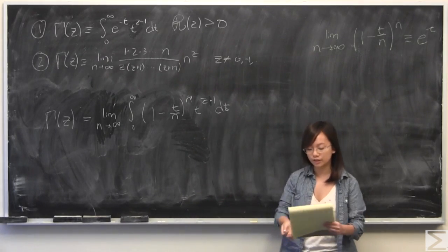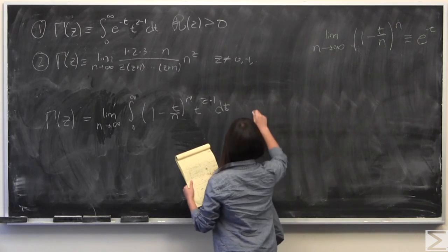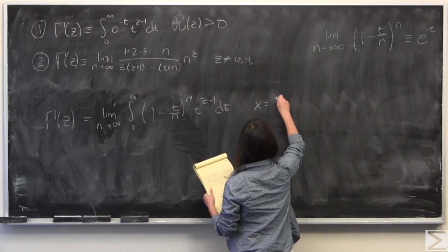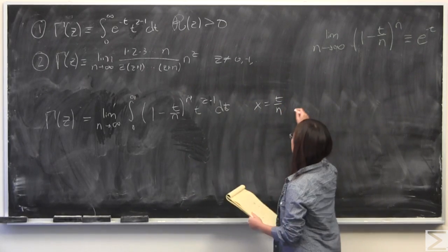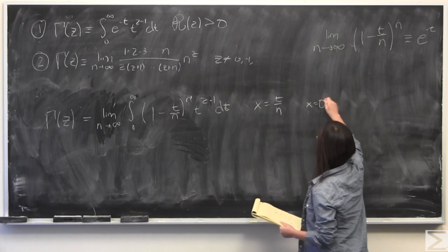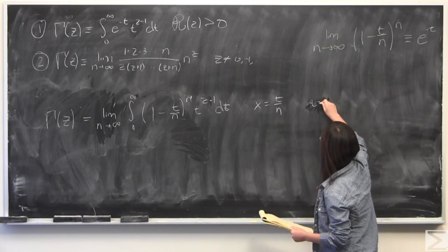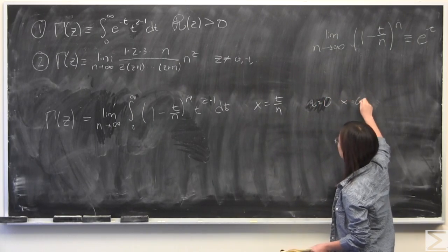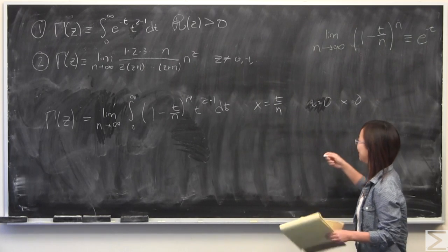I'm going to do a change of variables. I'm going to use x is equal to t divided by n instead. First step, look at the boundaries. So at 0, or at t is equal to 0. Apologies. x is also going to be equal to 0 because t is 0, even if n goes to infinity, well, especially if n goes to infinity, it's going to be equal to 0.